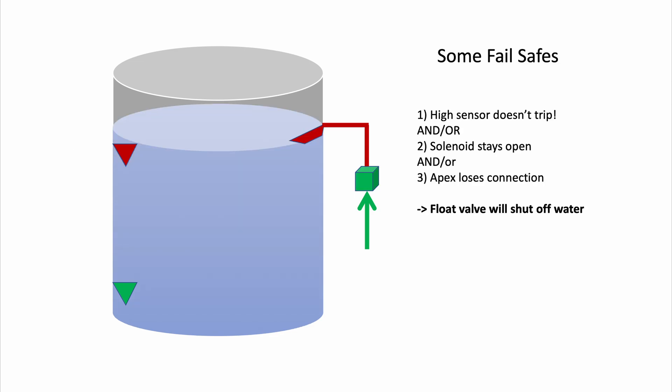And before we go I wanted to share with you a couple of important fail-safes because you don't want to rely on automation for everything. So if the high sensor doesn't trip or if my solenoid stays open for example or if my Apex loses connection then the fail-safe here would actually be my float valve. The float valve will be able to turn off the water and my RODI reservoir is not going to overfill or overflow.